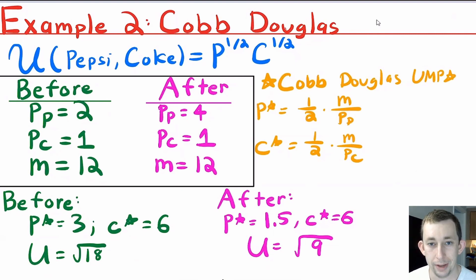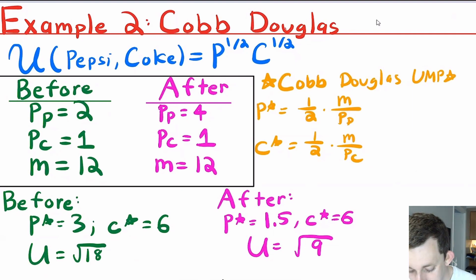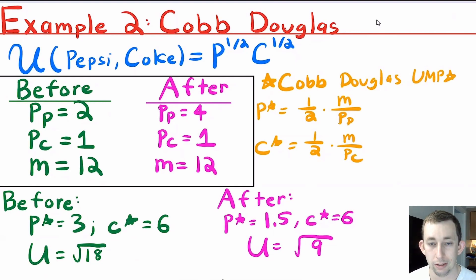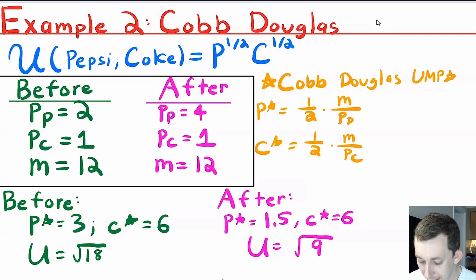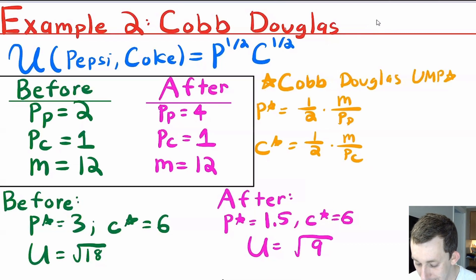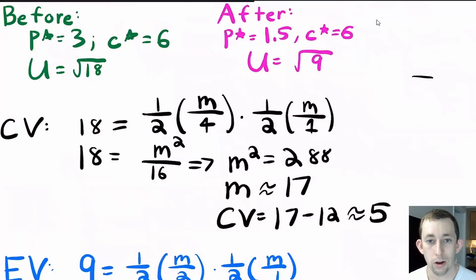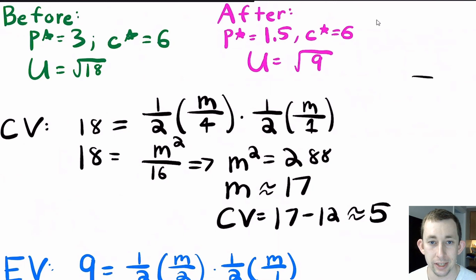Using this Cobb-Douglas shortcut, before the price change the optimal amount of Pepsi is 3, Coke is 6, and the utility is √18. After the price change, we get 1.5 Pepsis and 6 Cokes, and the utility is √9. To find compensating variation, I need the amount of money to give Bill to get him back to a utility of √18 at the new prices, given he's currently at √9.